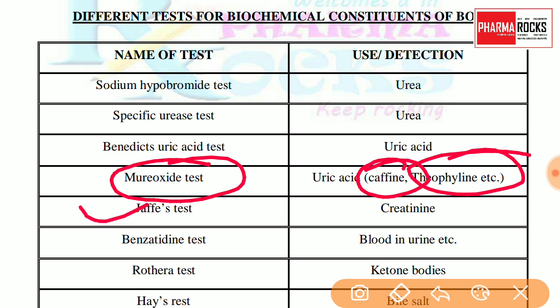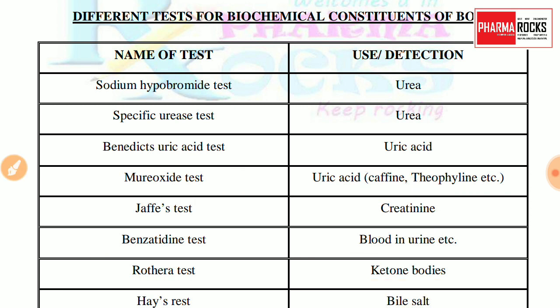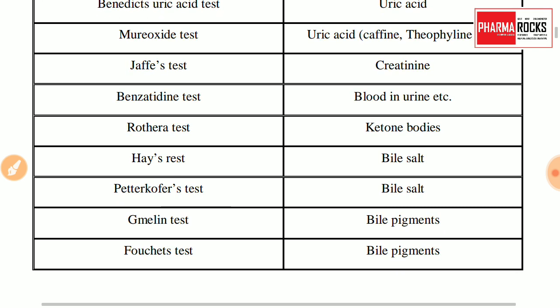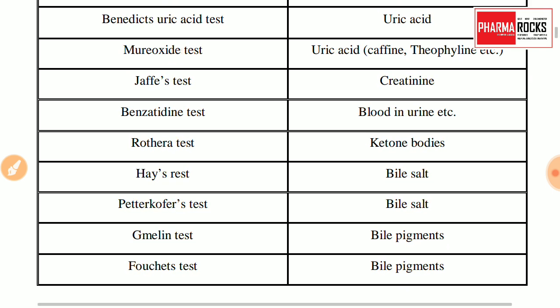Jaffe's test is performed for the identification of creatinine. Then, benzidine test is for blood in urine. Then, Rothera test is for ketone bodies. ये बहुत ही famous question है — Rothera test is performed for ketone bodies.